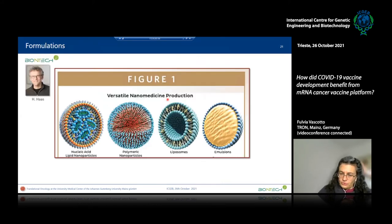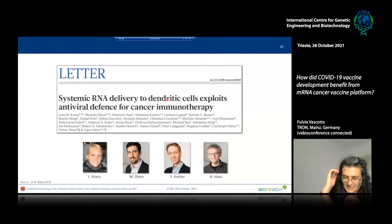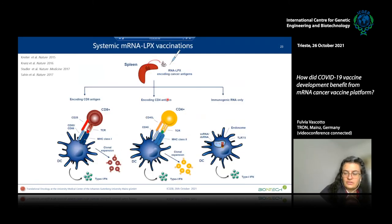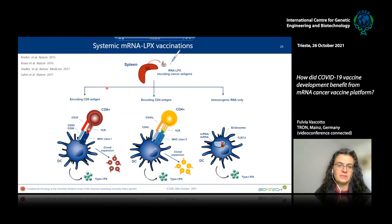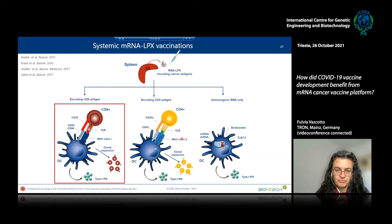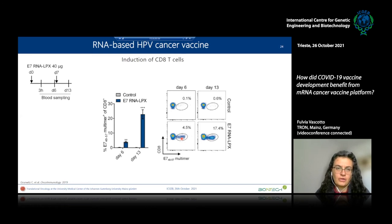When discussing vaccines, formulation is always critical. Henrich was developing a formulation for the cancer vaccine that allowed us to publish the first study on systemic delivery of mRNA for cancer patient therapy. Briefly, the spleen is a major organ targeted in mice, and in humans the formulation carries the mRNA so that CD4 and CD8 T cells are primed.